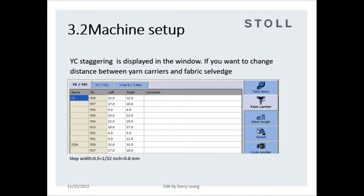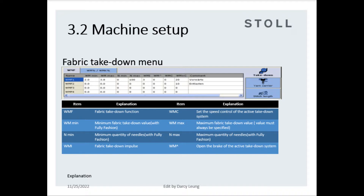MP25 for comb elastic — that MP value depends on gauge and elastic quality. YC staggering is displayed in the window; adjust if you want to change the distance between yarn carriers and fabric selvage. Fabric takedown menu: WM MIN is minimum fabric takedown value with fully fashion. N MIN is minimum quantity of needles with fully fashion. WMI is fabric takedown impulse. WMC sets the speed control of the active takedown system. WM MAX is maximum fabric takedown value — a value must always be specified. N MAX is maximum quantity of needles with fully fashion. WM opens the brake of the active takedown system.